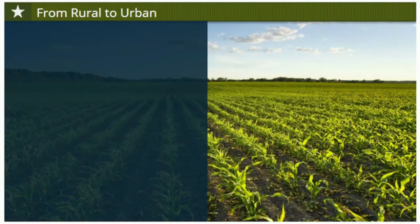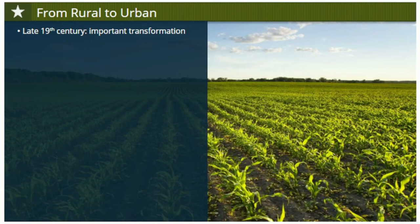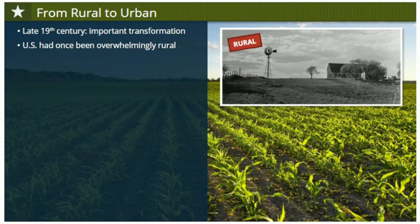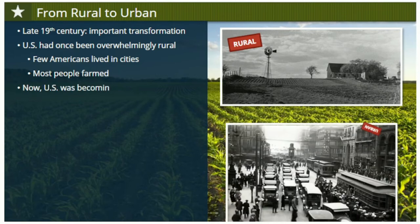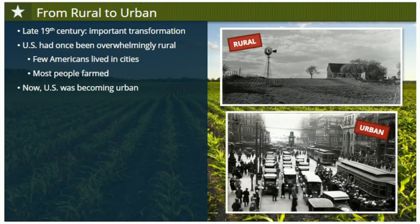Let's review a few things in order to put populism in its proper context. American life was transforming in some important ways at the end of the 19th century, after the Civil War. At its founding, the United States had been an overwhelmingly rural nation, with few Americans living in cities. Even the biggest American cities didn't compare with those of Europe. Most Americans had been farmers, at least on a small scale, even if they didn't make their living from agriculture. But a century later, the U.S. was rapidly becoming an urban nation.